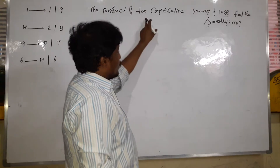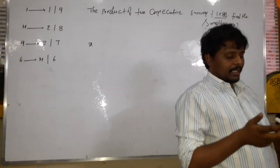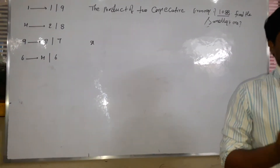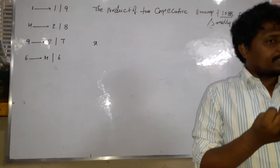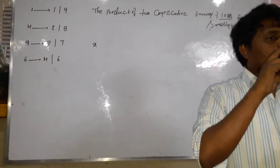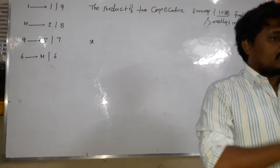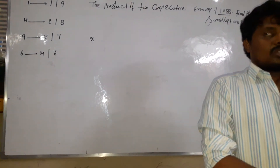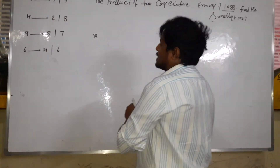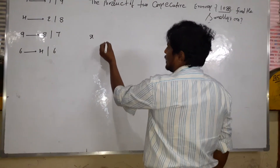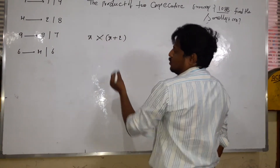The product of two consecutive even numbers. Even numbers are 2, 4, 6, 8, 10 — every even number is a multiple of 2. So let us suppose our unknown even number is x. The second even number must be equal to x plus 2.